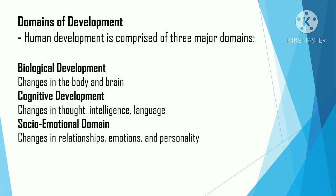Domains of Development: Human development is comprised of three major domains. Biological development — changes in the body and brain. Cognitive development — changes in thought, intelligence, and language. Social-emotional domain — changes in relationships, emotions, and personality.